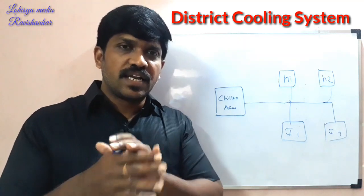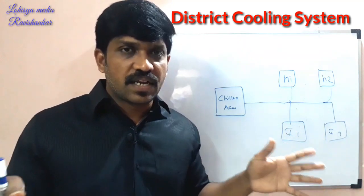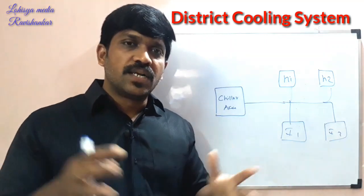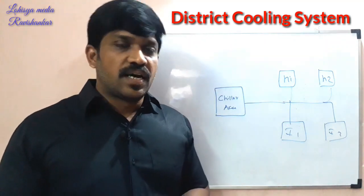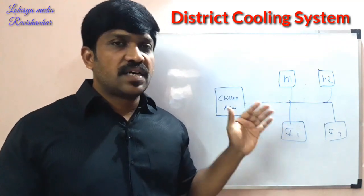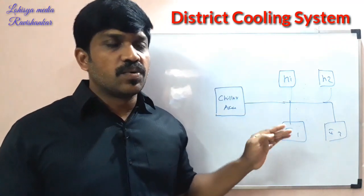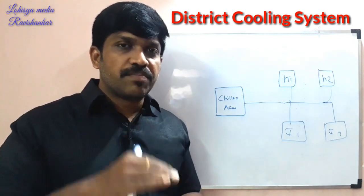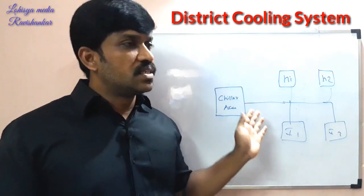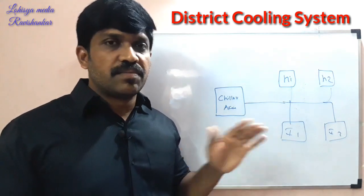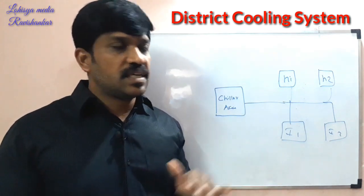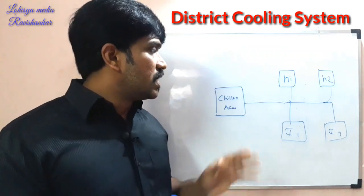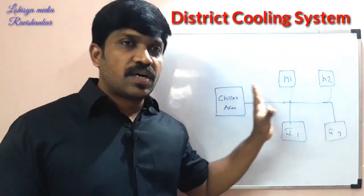There are all types of consumers. If you use the piping network, you can distribute the chilled water. There are some energy losses, but you can use insulated pipes. This is a basic chilled water system.